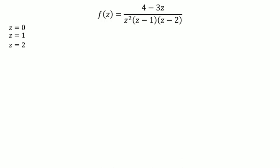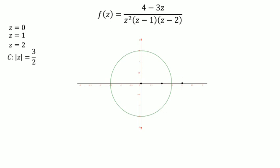Out of these three poles, how many lie inside our contour C? The contour C, |z| equals 3/2, is a circle centered at the origin with radius 3/2 in the anti-clockwise direction. Here z equals 0 and z equals 1 lie inside this contour C, but z equals 2 lies outside. So we will find residues only at z equals 0 and z equals 1.